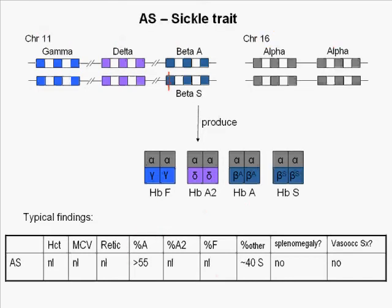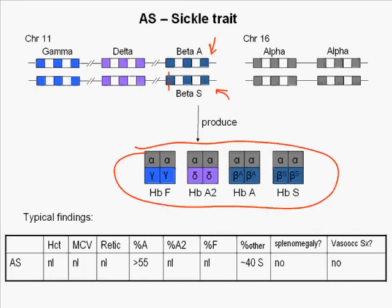In sickle trait AS, one beta globin gene is normal and the other carries the sickle point mutation. Four hemoglobins are produced: small amounts of hemoglobins F and A2, with the balance being made up of hemoglobins A and S.